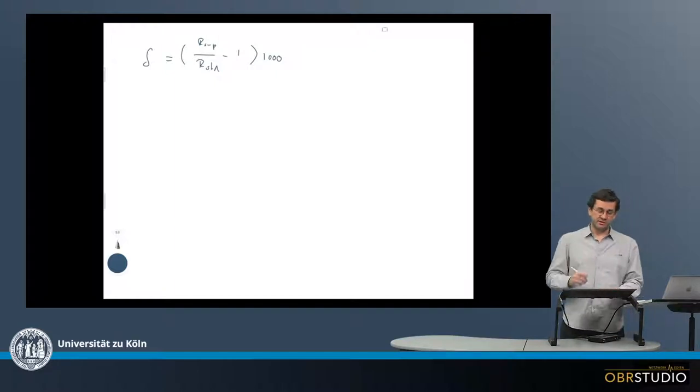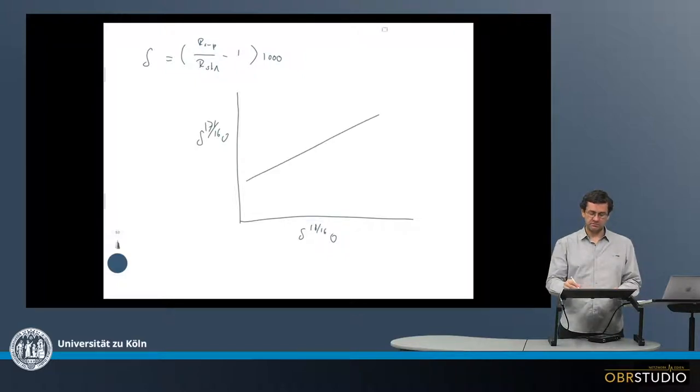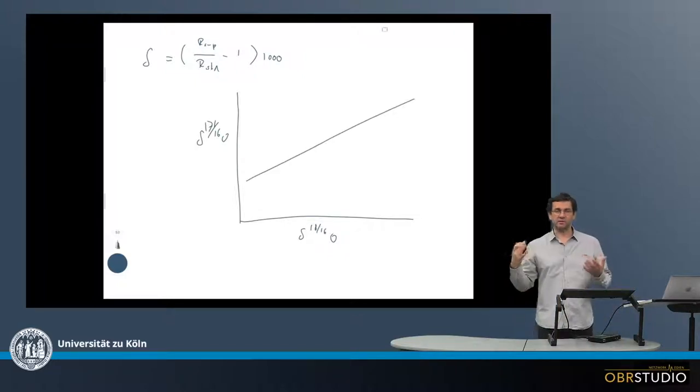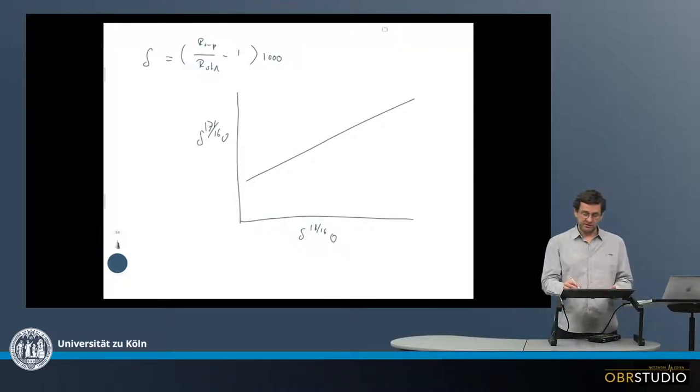The delta notation is typically plotted in a 3-isotope plot, something like this, with, for example, the delta 18-16 oxygen ratio on the x-axis and a delta 17-16 oxygen ratio on the y-axis. This might be a fractionation line within this plot. If it's samples from Earth, they will often plot on a single fractionation line called the terrestrial fractionation line, which has a slope of about 0.522.